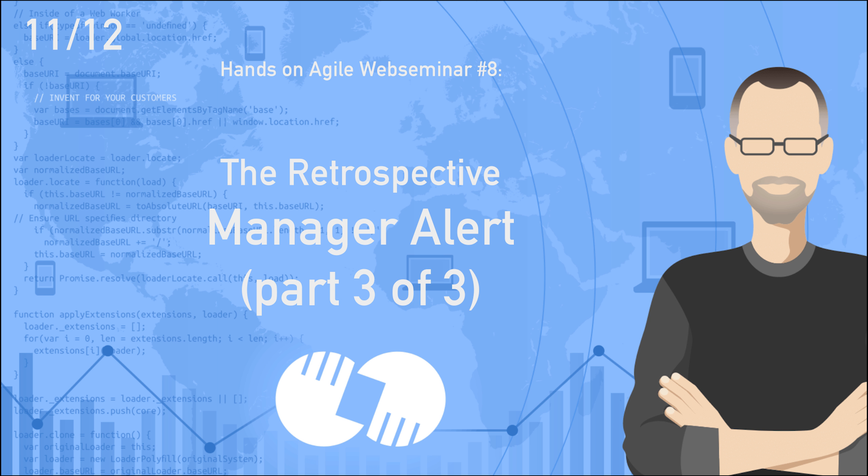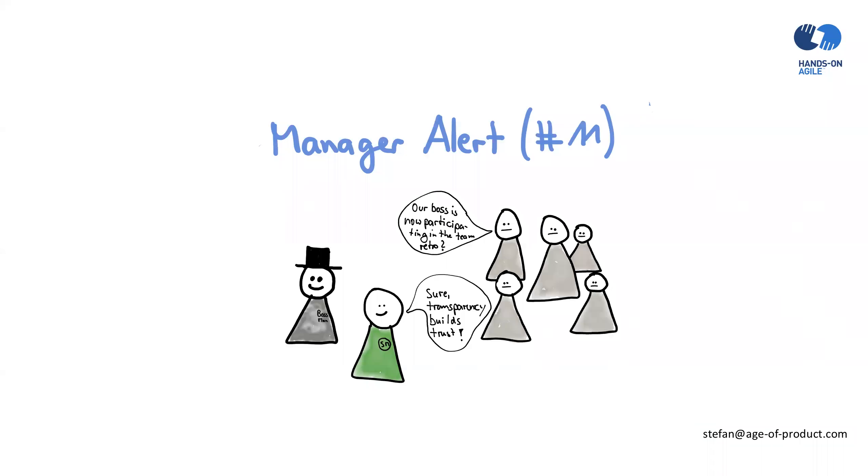Number 11, manager alert. The Scrum Master permits stakeholders, or worse, line managers to participate in the team retrospective.